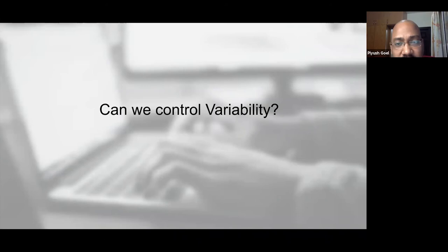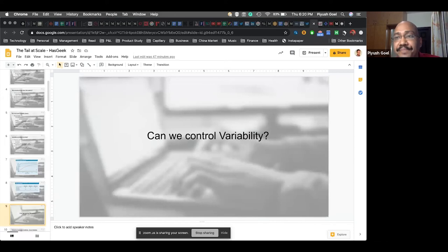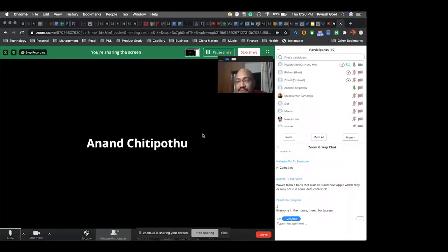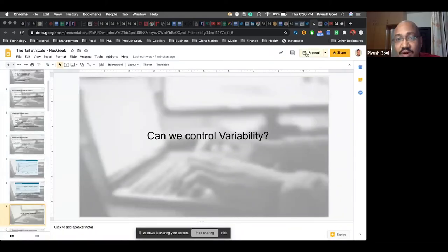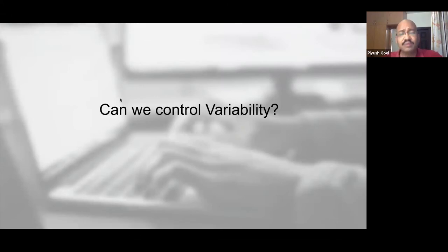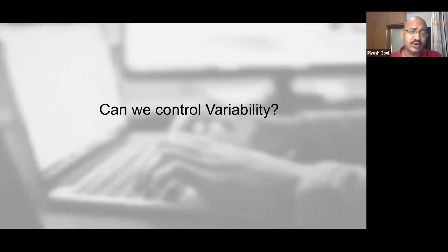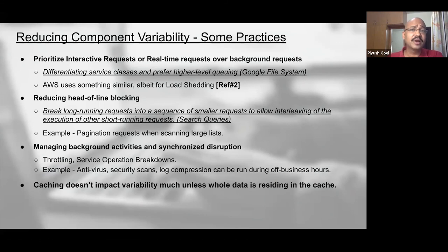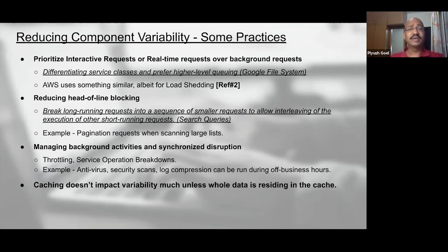Let me take a second pause here for any questions. Moving forward — now that we understand the possible causes of variability in response latency, the first question is: are there any ways to control this variability? Some of the practices the paper recommends are ones that I've also seen other companies and systems propose independently.